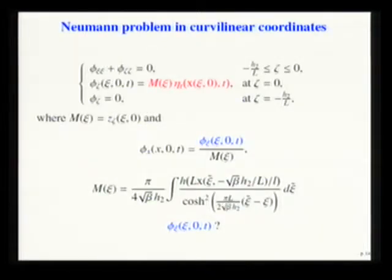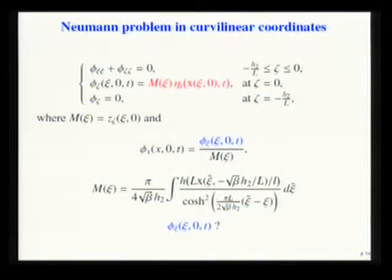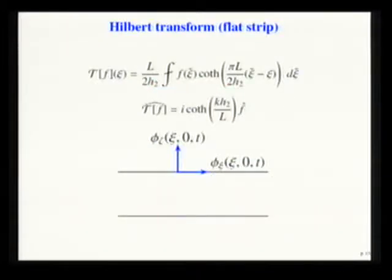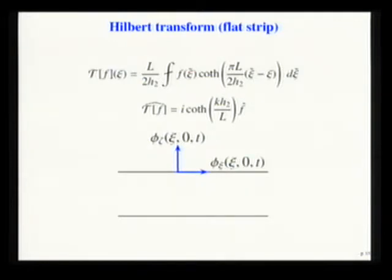To deal with it, we perform a conformal mapping to transform the physical region into a flat strip, introducing curvilinear coordinates, and also the so-called terrain coefficient that modifies the Neumann condition at the top and simplifies the Neumann condition at the bottom. With this flat strip, we have to solve this problem to find the tangential derivative at the upper boundary to recover the physical velocity. The terrain coefficient is an analytic function — smooth — in contrast with the original description of the topography. We then transform Neumann information (normal derivatives) into tangential derivatives via a Hilbert transform.